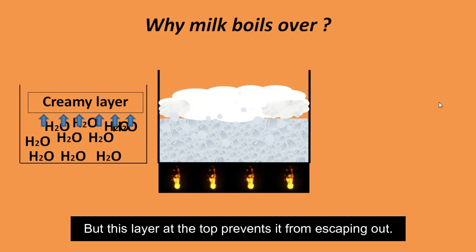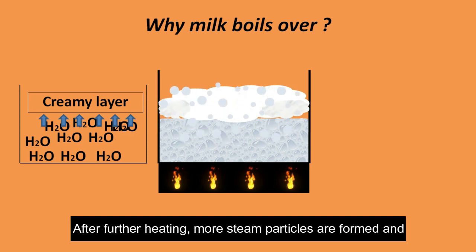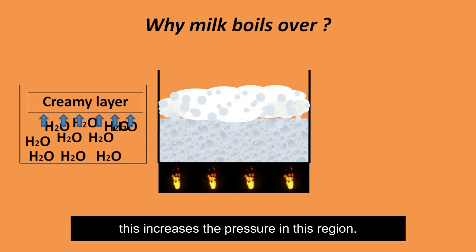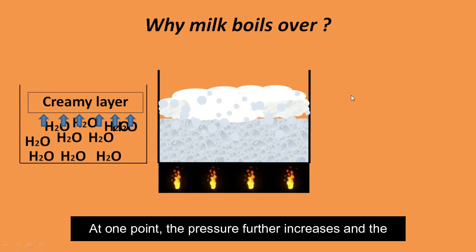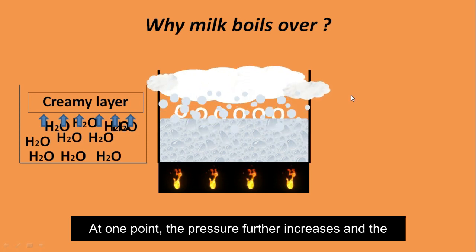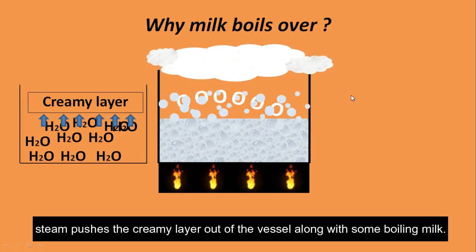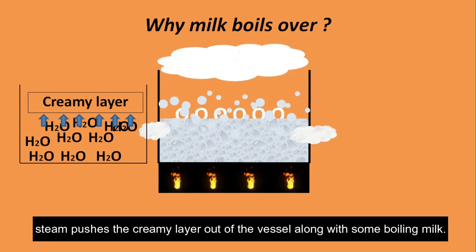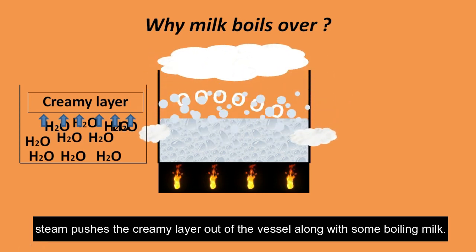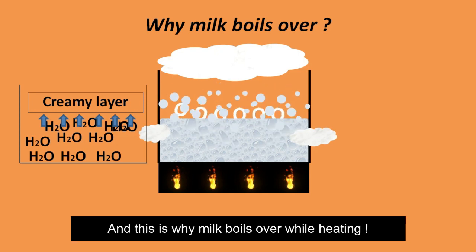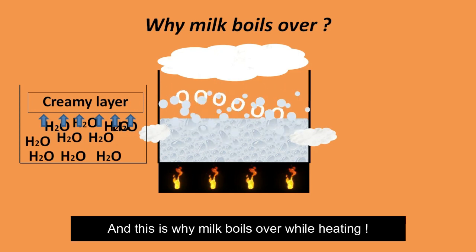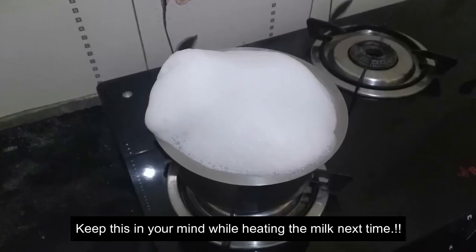This steam tries to escape out of the vessel, but the creamy layer at the top prevents it from escaping. After further heating, more steam particles are formed and this increases the pressure in that region. At one point the pressure increases further and the steam pushes the creamy layer out of the vessel along with some boiling milk — and this is why milk boils over while heating.